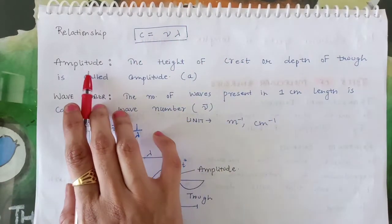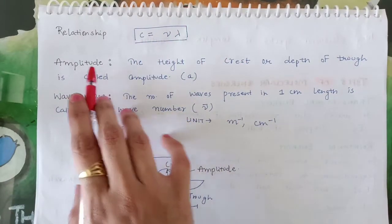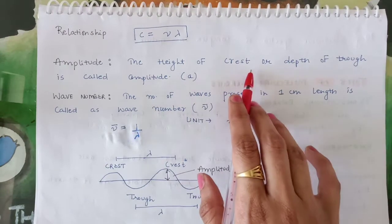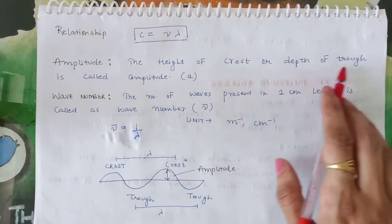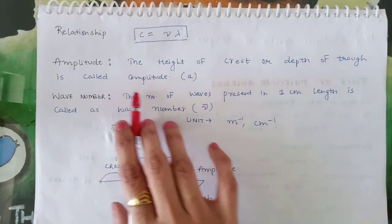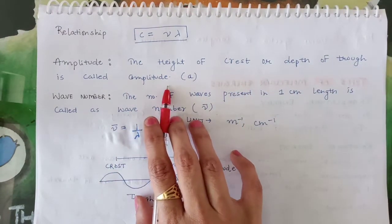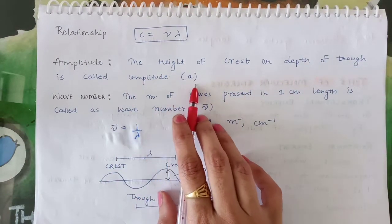Next is amplitude. The height of a crest or depth of a trough is called amplitude. It is denoted by a.